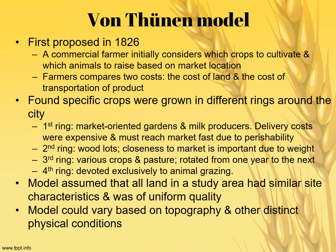The second ring in the Von Thünen model is wood. In the 1800s, wood was used much more frequently for fuel, heating homes, and building — so it needed to be close, and it's also expensive to transport because of its weight. The third ring is for various crops like grains, which can be located further away because they're not as perishable or fragile and therefore not as expensive to deliver. The fourth ring is specifically for ranching — it can be even further out because you want extensive, cheap land, and animals can transport themselves. The model assumes all land has similar site characteristics and uniform quality, which isn't true in real life. It could also vary based on topography, especially rivers, which impact transportation costs.